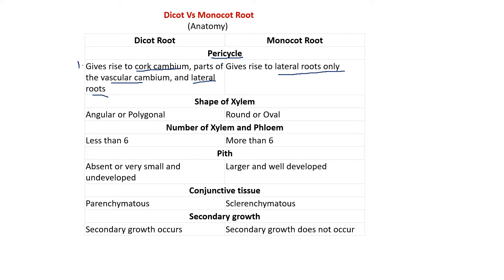The second difference is the shape of xylem. If you look at the shape of the xylem elements or xylem cells — usually tracheids — they are angular or polygonal in dicot root. While in the case of monocots, they are round or oval.